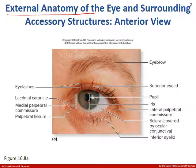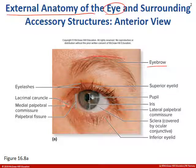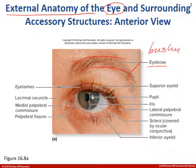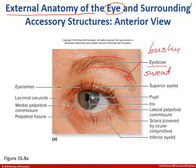Some external anatomy structures of the eye that we should talk about. One is the eyebrow, and eyebrows are supposed to be bushy because they're supposed to stop sweat from entering into the eye. Sweat is really salty and it can irritate your eye.